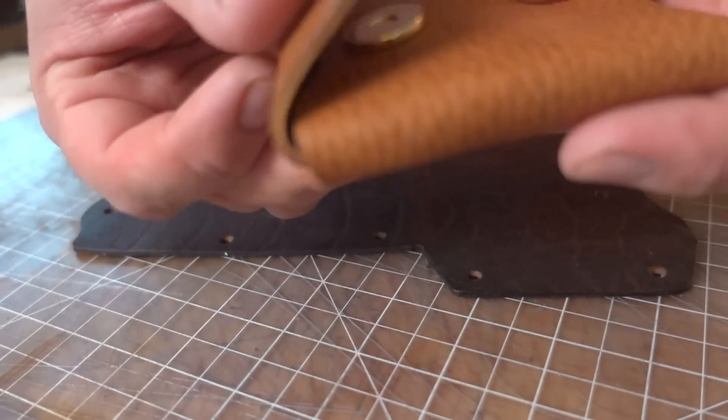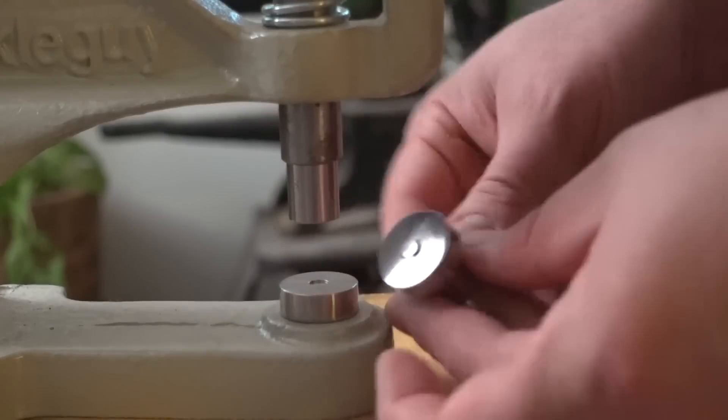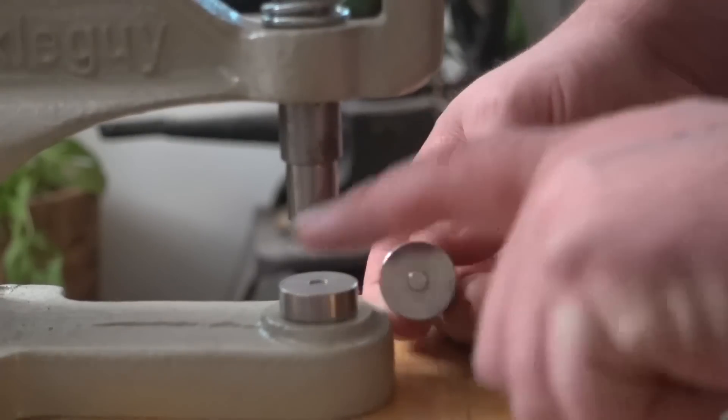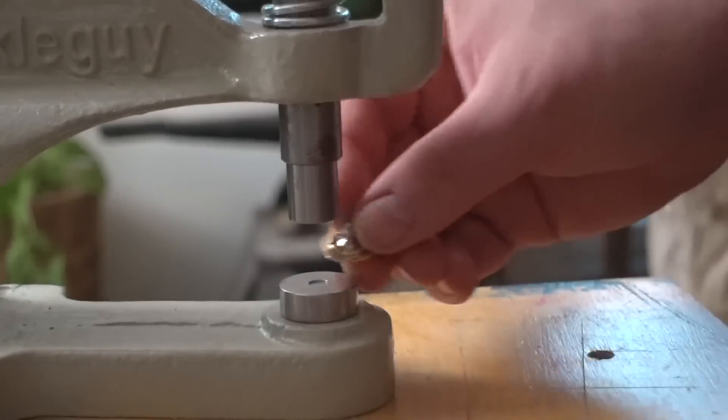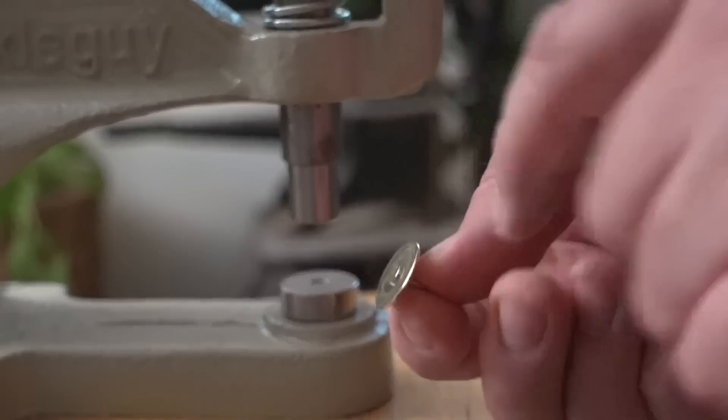You want to make sure that you don't sell or make this for someone and their cards start falling out because the magnet's not strong enough. So I'm using the strongest one there is. There's a three-piece die set for these. The first one we're going to do, this is the okay, so I use the part that sticks out.